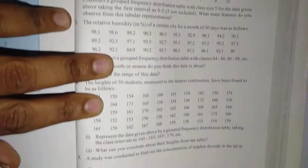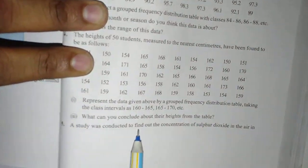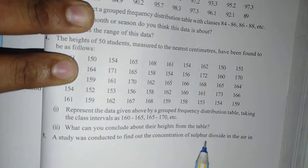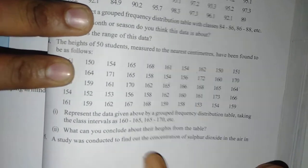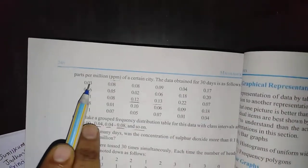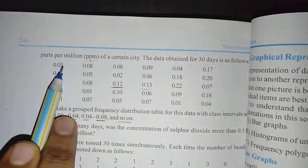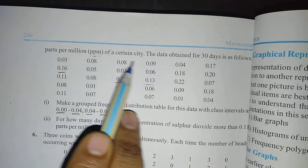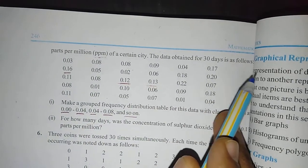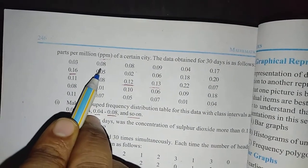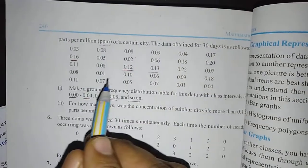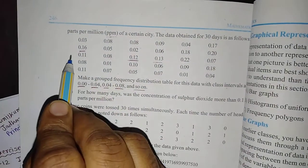Exercise 14.2, Question No. 5: A study was conducted to find out the concentration of Sulphur Dioxide in the air in parts per million of a certain city. The data obtained for 30 days is as follows — 0.03, 0.08, 0.08, and so on. It is given for all 30 days.